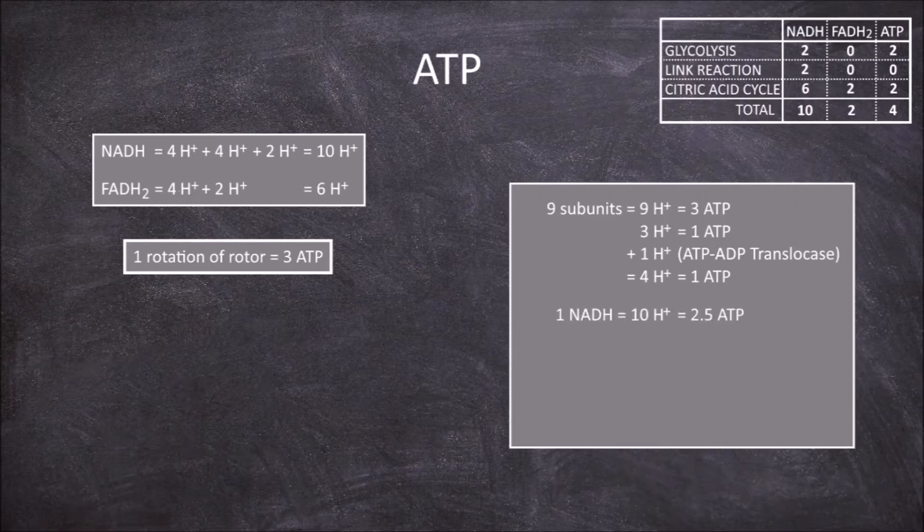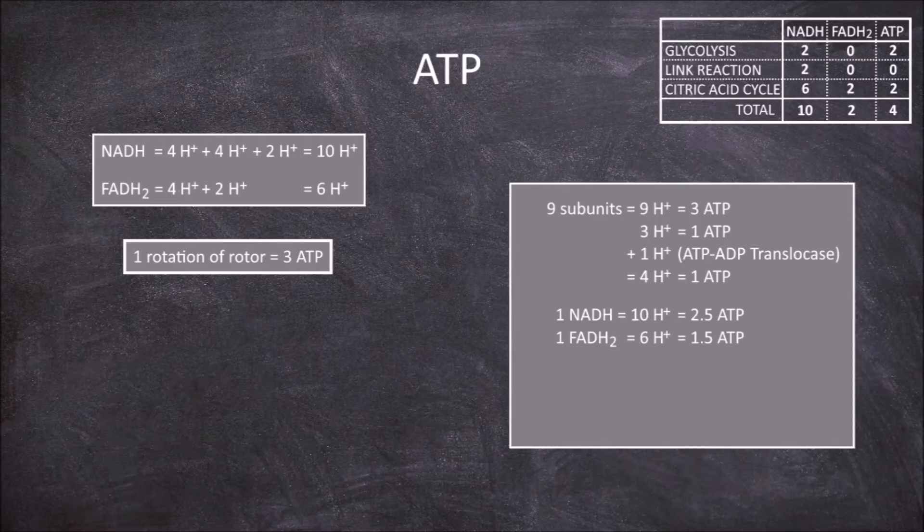In this scenario, for every NADH with 10 hydrogen protons pumped, it's 2.5 ATP, and for every FADH2 with 6 hydrogens pumped, it's 1.5 ATP.